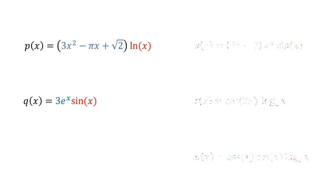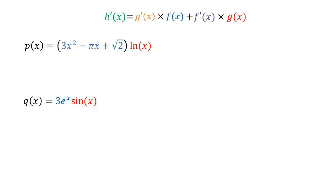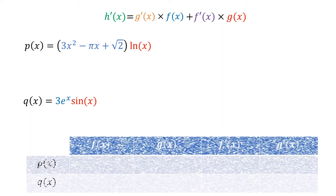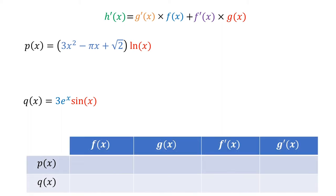So we could use the product rule with all of these remaining functions. However, s and u would require that you use the product rule twice each, and t would require something called the chain rule. So let's just look at the simpler functions here, p and q. I'll start by putting the product rule up here. For both p and q, you'd want to start by identifying the f and the g, then computing their derivatives. Here's a table to keep things organized.